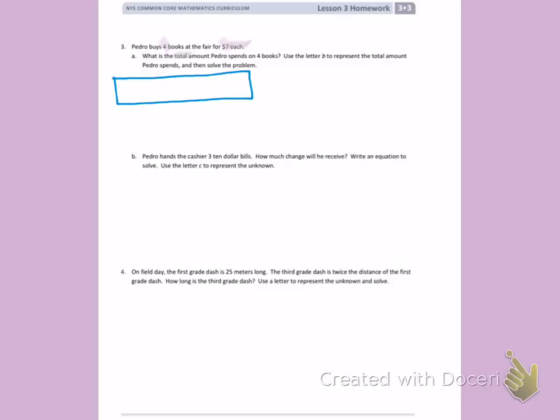Pedro has 4 books. Each book costs $7. I need to find the total amount he spent. So I'm going to multiply 4 books times $7,